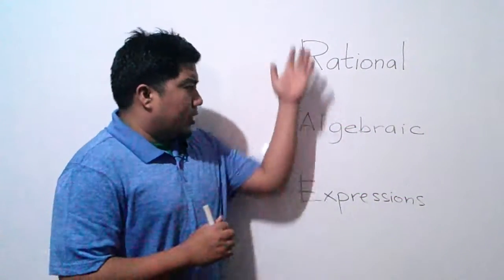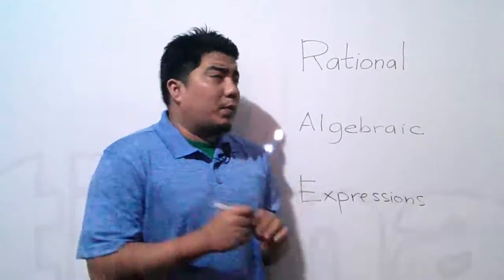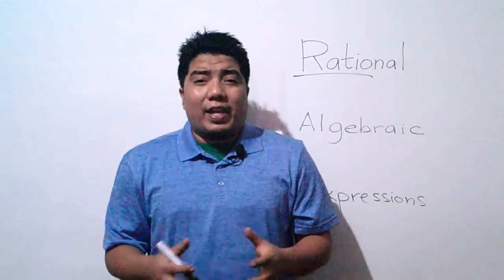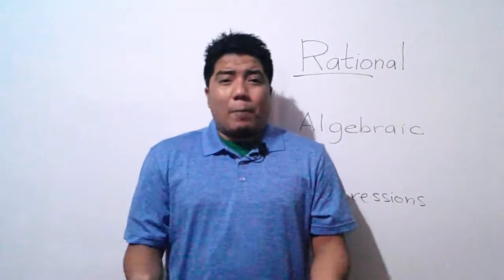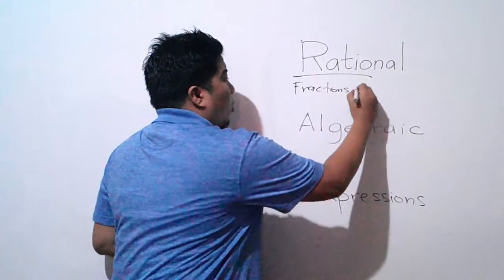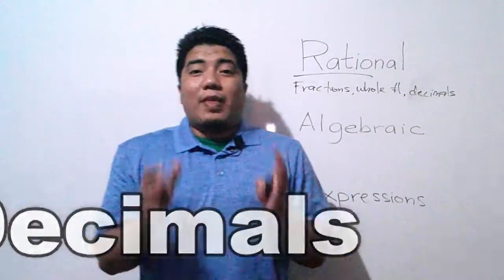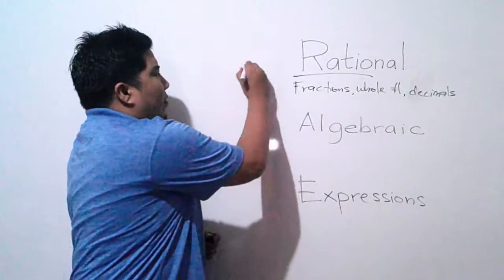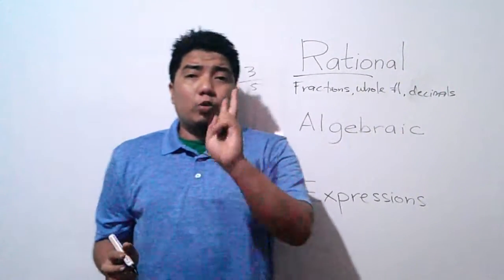Let's consider three words. Starting with the first: rational. Rational comes from the word ratio, which in elementary days is defined as the comparison of two quantities. If you consider a number as a comparison of two quantities, we could consider those numbers as fractions, whole numbers, and decimals that can be convertible to fractions.